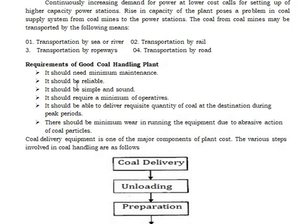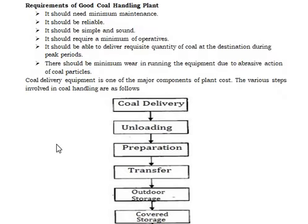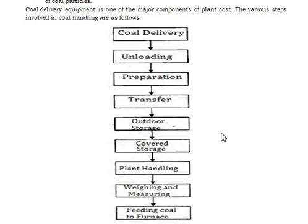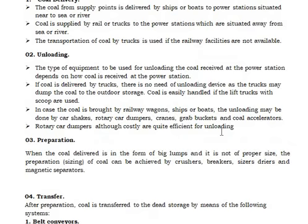Next, we proceed with the requirements of a good coal handling plant. It should need minimum maintenance, be reliable, simple and sound, require a minimum number of operatives, and be able to deliver the requisite quantity of coal at the destination during peak periods. There should be minimum wear when running the equipment due to the abrasive action of coal particles. The flow chart shows: coal delivery, unloading, preparation, transfer, outdoor storage, covered storage, plant handling, weighing and measuring, and feeding coal to the furnace.